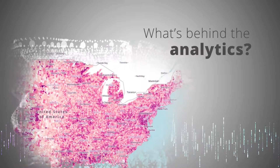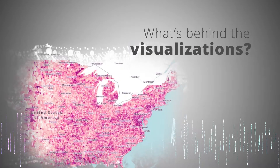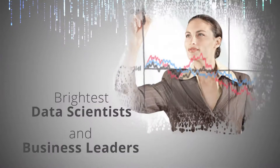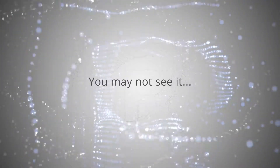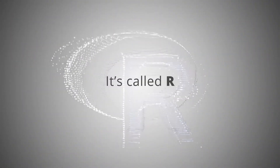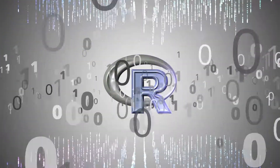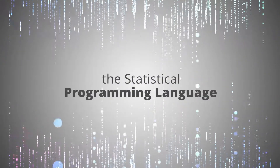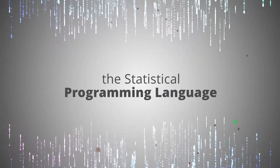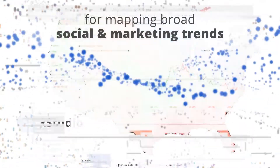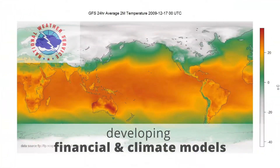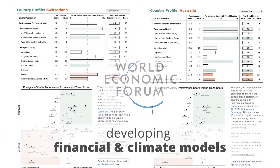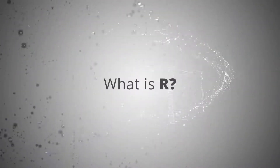What's behind the statistics, the analytics, and the visualizations that today's brightest data scientists and business leaders rely on to make powerful decisions? You may not always see it, but it's there. It's called R — Open Source R — the statistical programming language that data experts the world over use for everything from mapping broad social and marketing trends online to developing the financial and climate models that help drive our economies and communities. But what exactly is R?